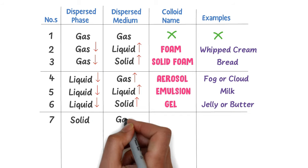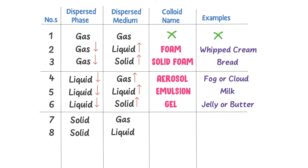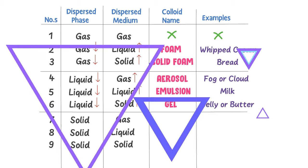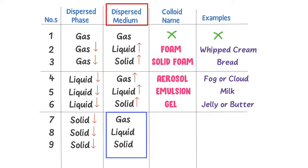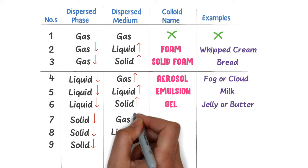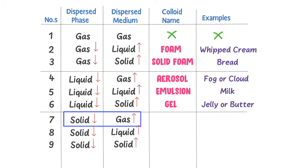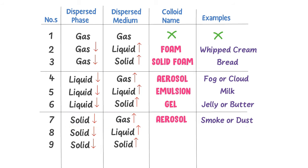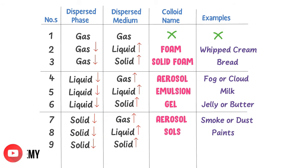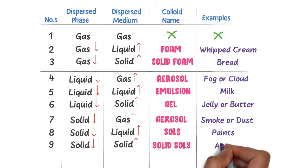The seventh type is solid and gas, the eighth is solid and liquid, and the ninth is solid and solid. In this category, solids are the dispersed phase in smaller proportion, while gas, liquid, and solid are the dispersed medium in larger proportion. The name of solid and gas colloid is aerosol, and its example is smoke or dust. The name of solid and liquid colloid is sol, and its example is paint. The name of solid and solid colloid is solid sol, and its example is alloy.